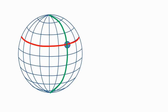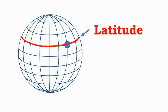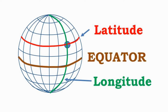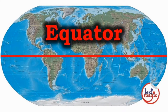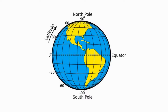Any point on the Earth can be defined by its latitude and longitude. Each latitude or parallel defines a circle parallel to the equator. The equator defines the zero-degree latitude. The north pole is at latitude 90 degrees north, and the south pole is at latitude 90 degrees south.